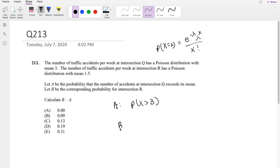And B corresponds to intersection R, where R's mean is 1.5, where x is greater than 1.5.